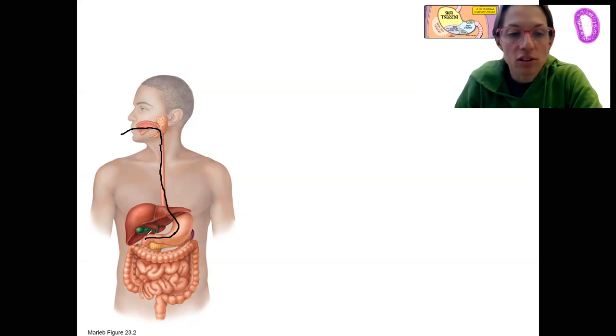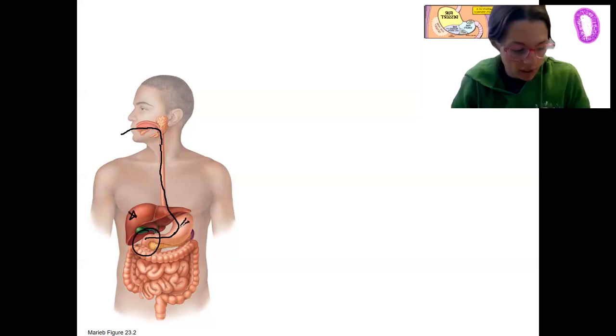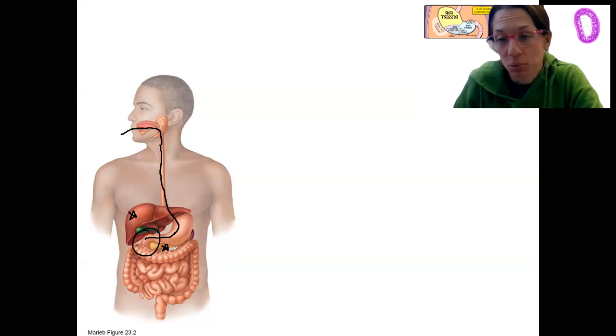This week we're going to start here. We're going to talk about the small intestine and what happens in it, probably the most complex region of the digestive system. It's also going to receive secretions from the liver and pancreas, which means we're going to talk about those as well.